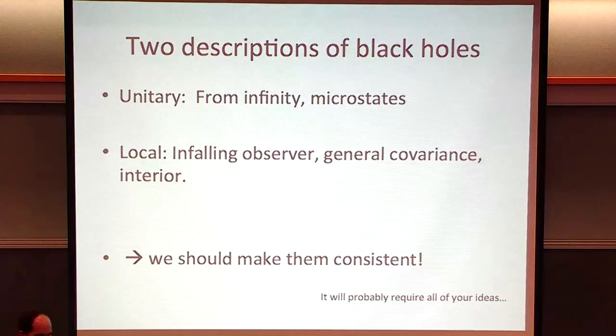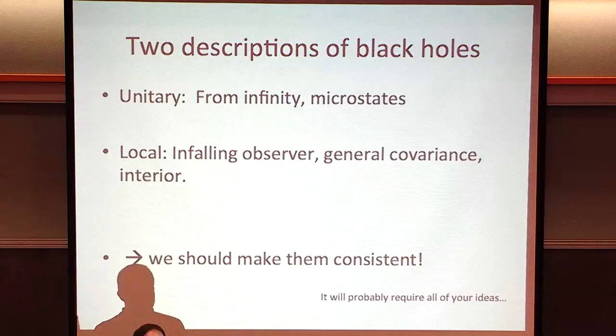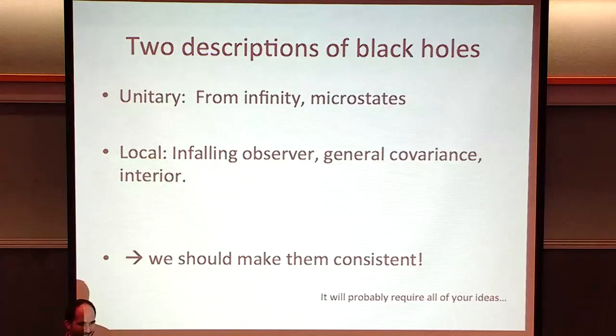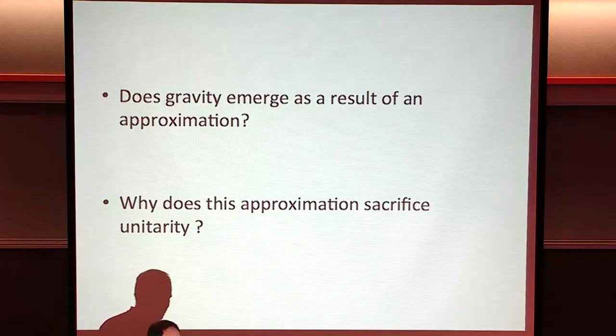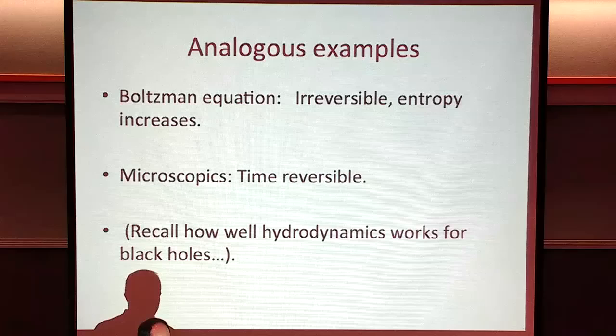In general, when we had problems with dualities, it was not that the duality was wrong, but that our understanding of the duality was wrong. The question is whether gravity results from some approximation, and perhaps this approximation sacrifices unitarity.